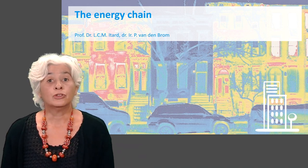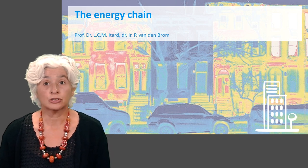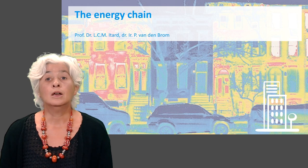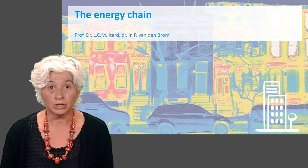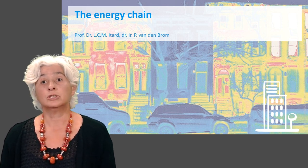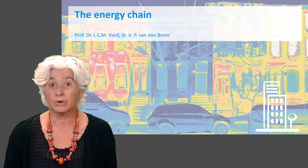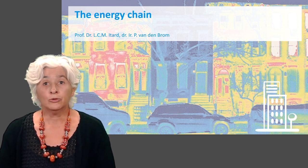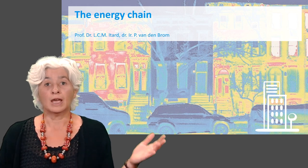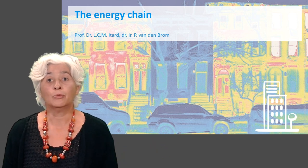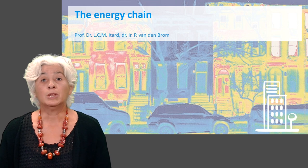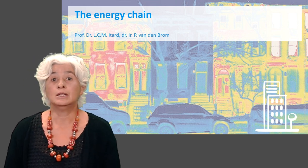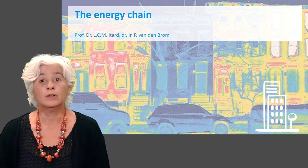The energy chain gives us a structure to find out on which parts of the system to act from the viewpoint of technology, and it also tells us something about actors to involve. Let's first zoom out to see the complete chain in order to understand what the differences are between demand and supply, and the processes leading from one to the other.